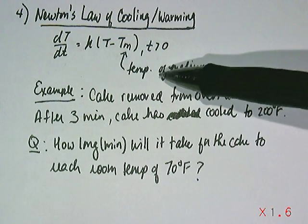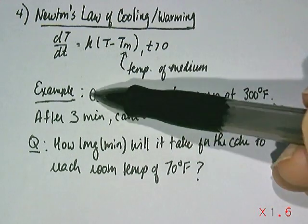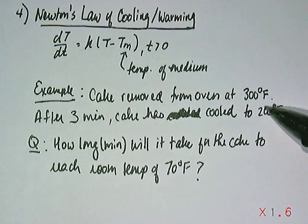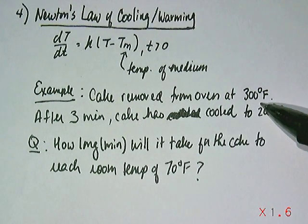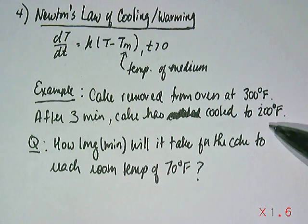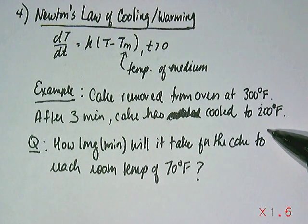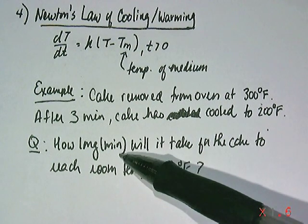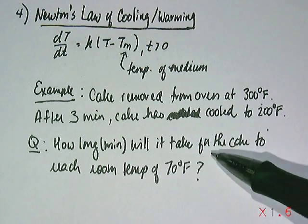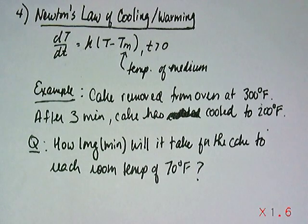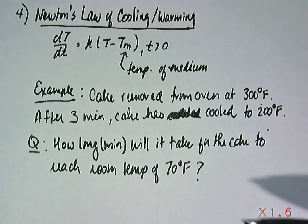So the example and the application that we're going to consider of this law is right here. We're going to look at the case of a cake. Let's suppose a cake is removed from the oven at 300 degrees Fahrenheit. Let it sit and notice that after three minutes it's cooled down to about 200 degrees Fahrenheit. And the question that we want to ask is, how long would it take, in minutes, for the cake to reach room temperature so that it's completely cooled down and you're ready to cut it and serve it?